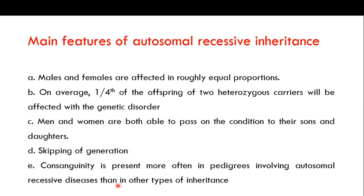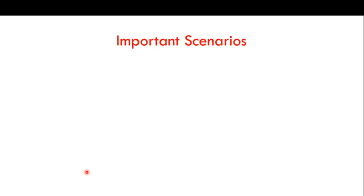Consanguinity is present more often in autosomal recessive diseases than in any other type of inheritance. Consanguinity refers to cousin marriages, and such marriages increase the chances of autosomal recessive genetic diseases occurring.